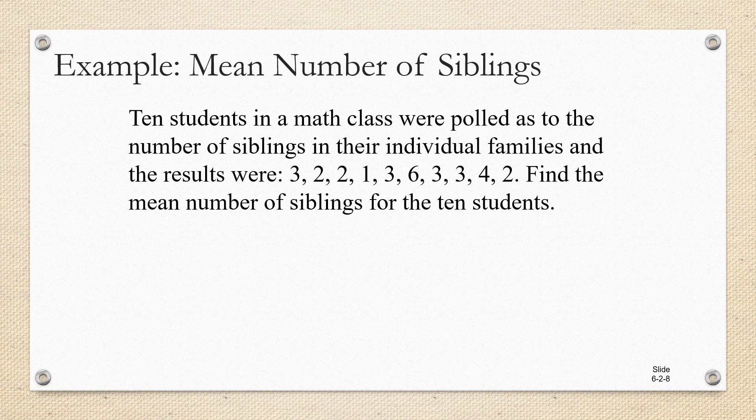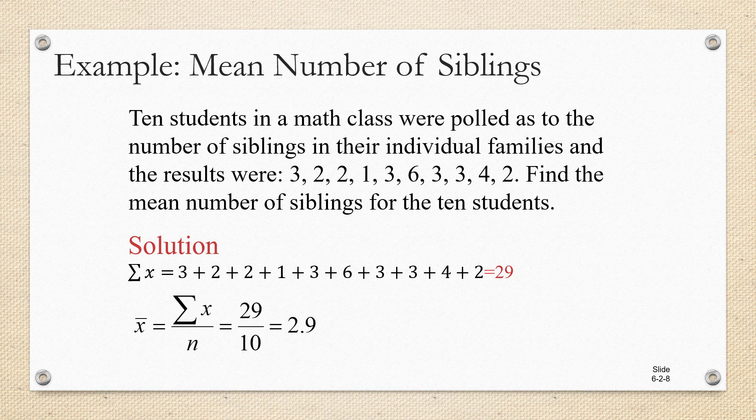So we know that we have 10 data values. We have to add these data values and that's what Sigma X means. Add up all the data values. Well, these data values add up to 29. Now we're going to divide by the number of data values to find out what the height of the water would settle down to in the tank. X bar equals Sigma X over n is 29 over 10, which is 2.9.